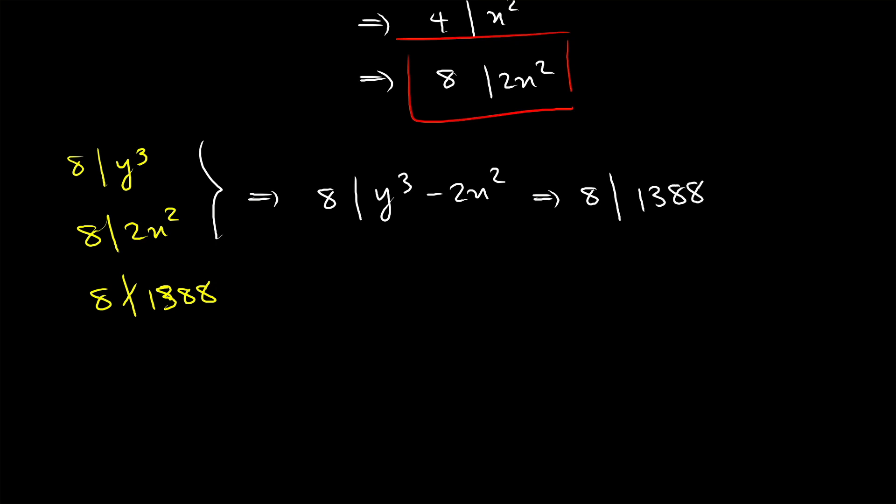So from this we should have 8 divides 1388 but we already know that 8 does not divide 1388 and this is a contradiction. Therefore we don't have any integer solution for our equation. And this brings us to the end of this video.